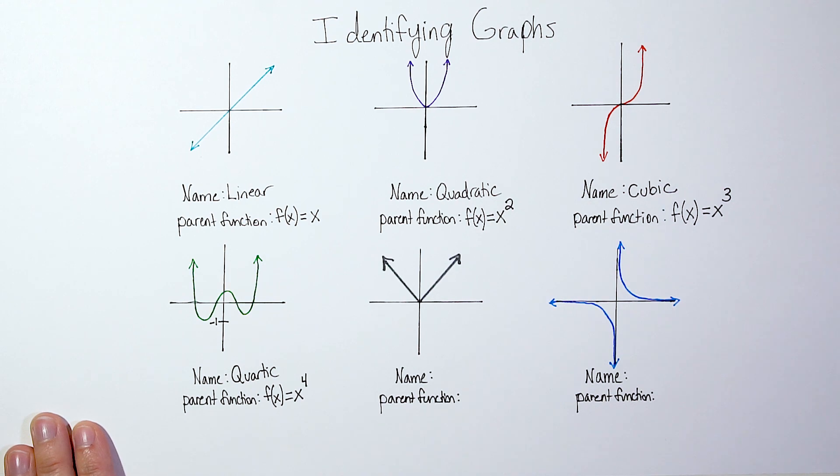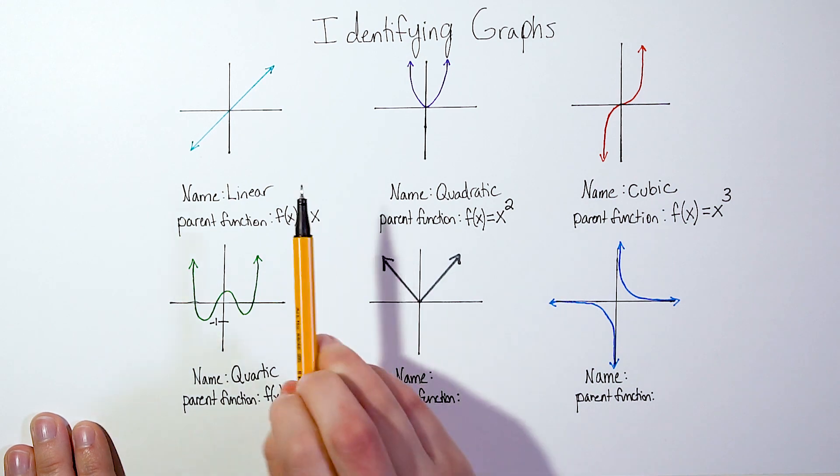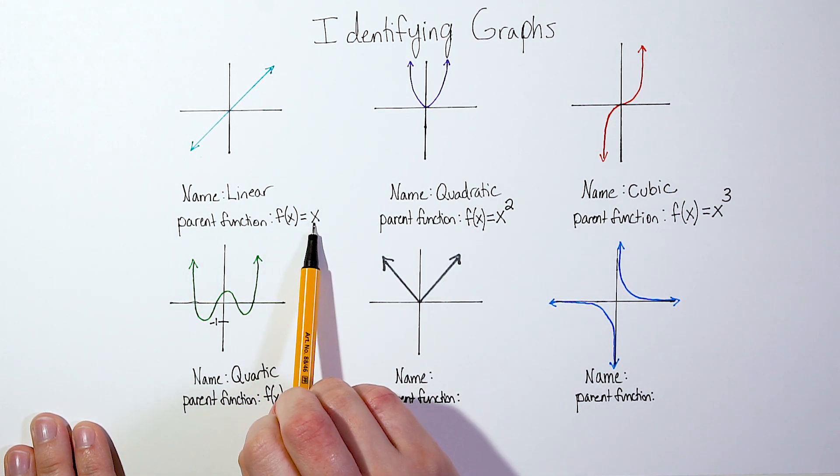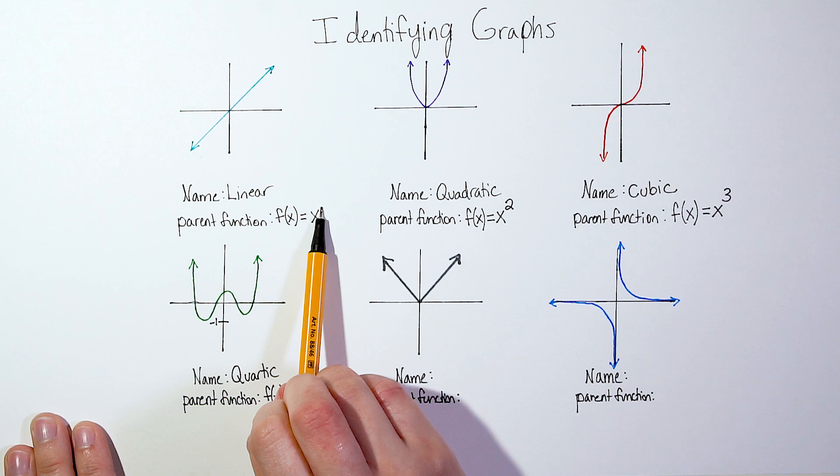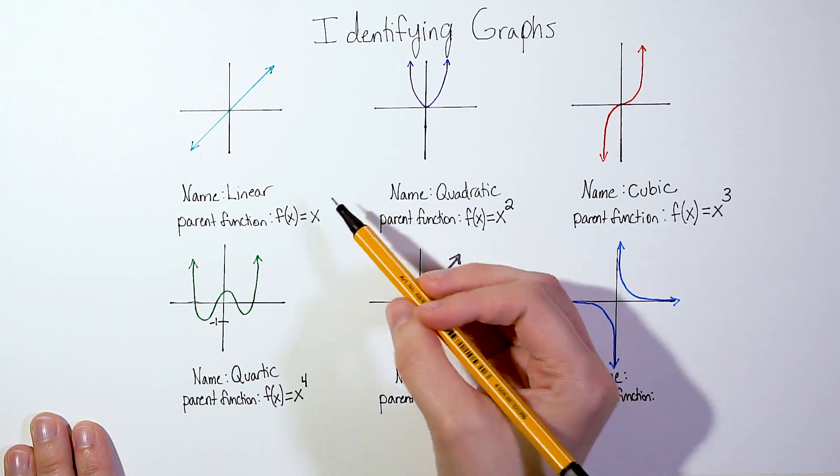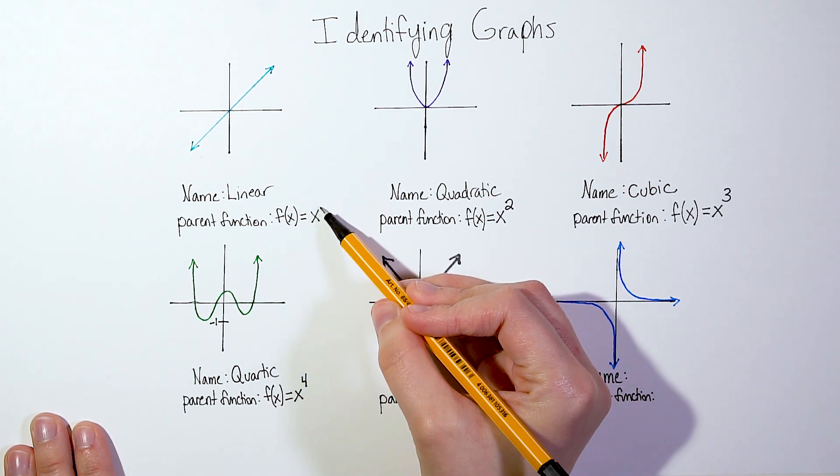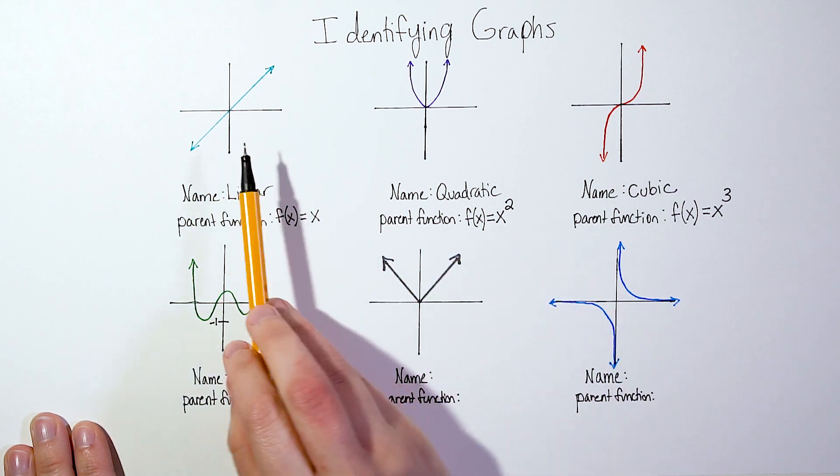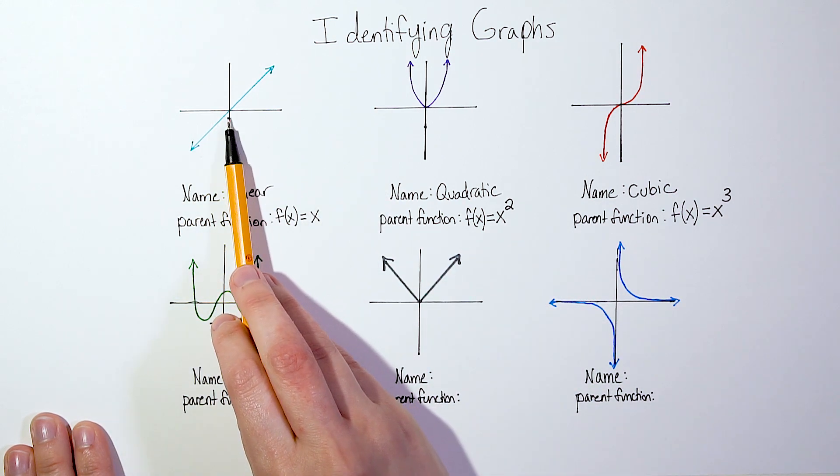So what's interesting is with these past three or past four graphs that we've done is notice that this parent function is to the power of one. We don't see that power of one, but it is there. There is an exponent of positive one right there.